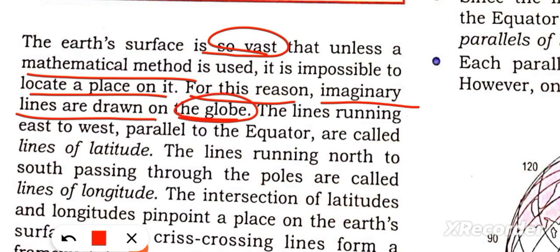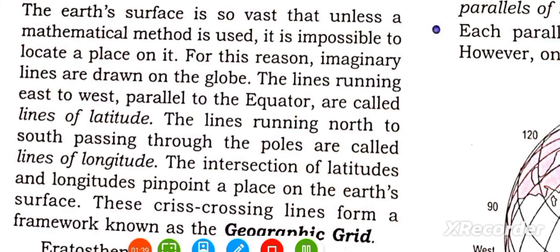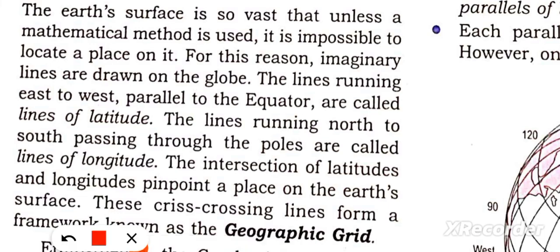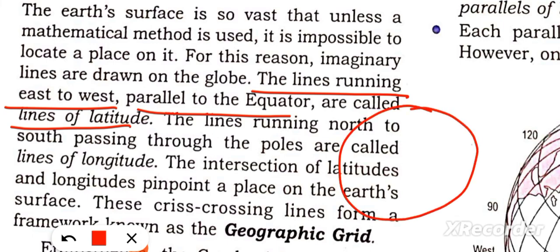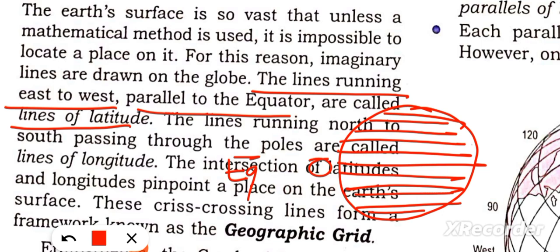Everyone has seen the globe. On the globe there are lines that run parallel to each other, from east to west. We call these lines parallel to the equator. The zero degree equator is the reference line, and the parallel lines we run are called latitudes.